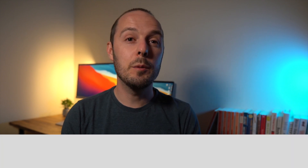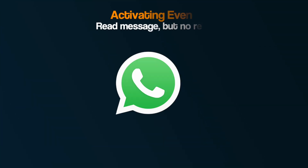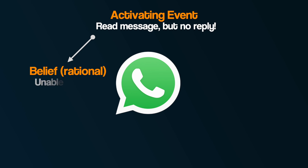A stands for Activating Event — simply the event that occurs in someone's life. It could be sending a message to your boyfriend or girlfriend on WhatsApp, seeing that they read it, but not getting a reply. It is important to note that it's not the event that leads to depression, but the next part of the model: B — Beliefs. Here the focus is on the beliefs, or the type of thoughts a person has — how they are interpreting the event. Some people might simply think their partner is unable to reply at that exact moment, or maybe their battery has died.